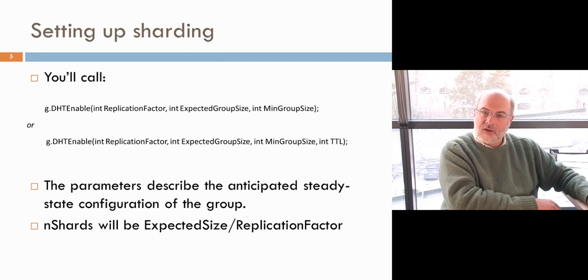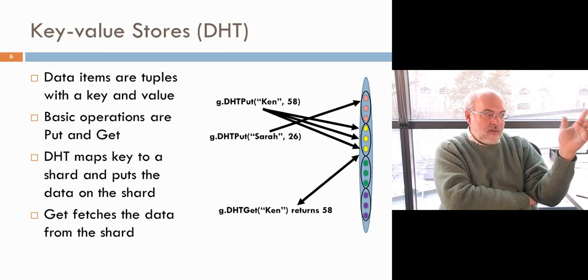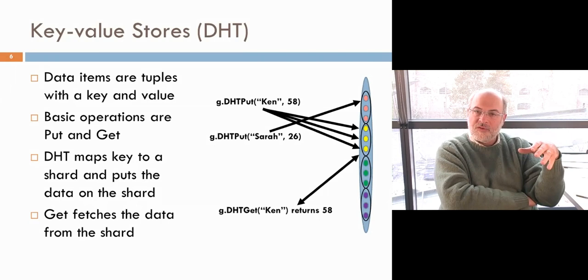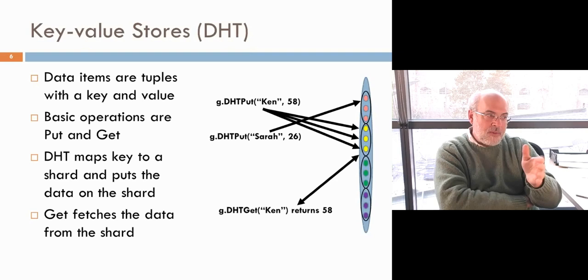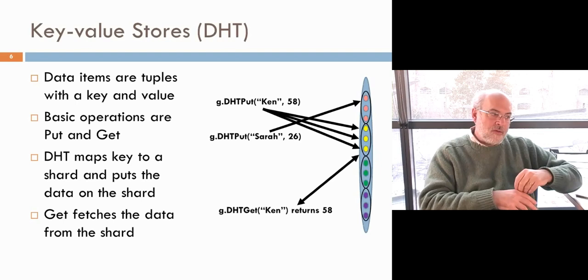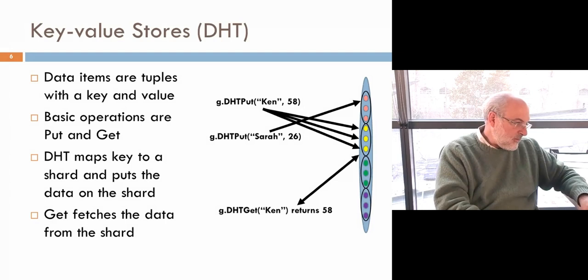The number of shards is always the expected group size divided by the target replication factor. DHT puts are tuples — key and value. Taking the key for 'ken', we generate a hash code, take that modulo the number of shards, which maps to the yellow shard, and put (ken, 58) there. A DHT put for 'sarah' with value 26 went to a different shard. If somebody does a DHT get of 'ken', we take the key, map it to the yellow shard, randomly load-balance among its members, do a point-to-point RPC, and get back 58.